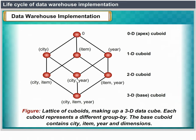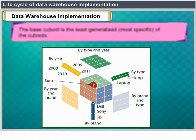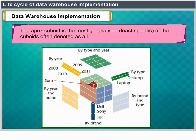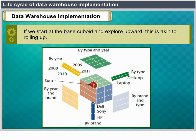A lattice of cuboids makes up a 3D data cube. Each cuboid represents a different group-by. The base cuboid contains city, item and year dimensions. The base cuboid is the least generalized and most specific of the cuboids. The apex cuboid is the most generalized, or least specific, and is often denoted as ALL. Exploring downward in the lattice from the apex cuboid is equivalent to drilling down within the data cube; exploring upward from the base cuboid is akin to rolling up.